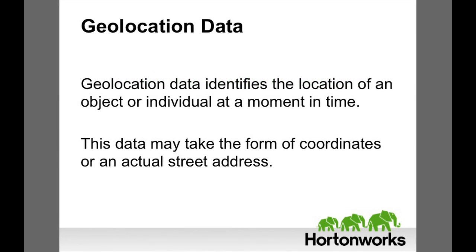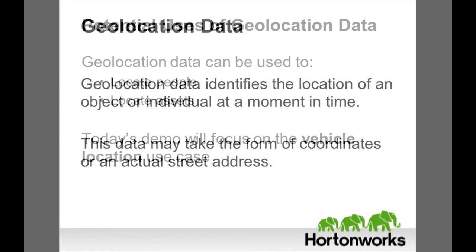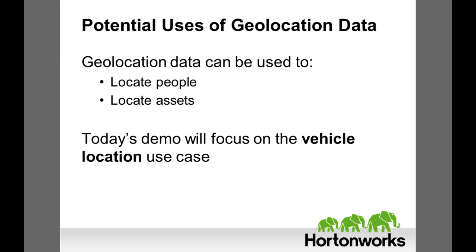Geolocation data identifies the location of an object or individual at a moment in time. This data may take the form of coordinates or an actual street address. Geolocation data is used to locate people or assets. For people, enterprises can learn where and when their customers congregate. For assets, transportation and logistics companies can better maintain their vehicles and control risk.